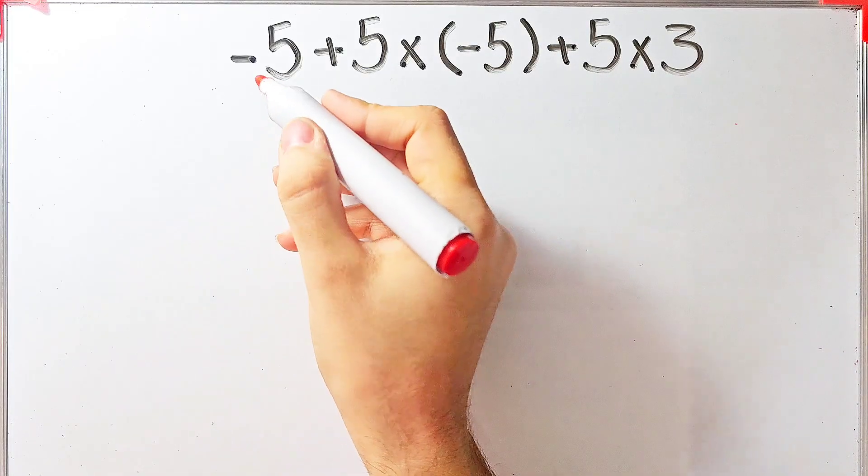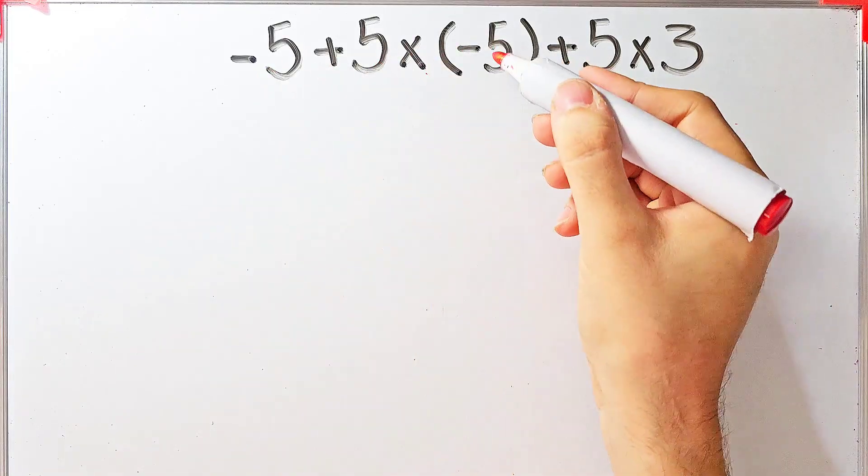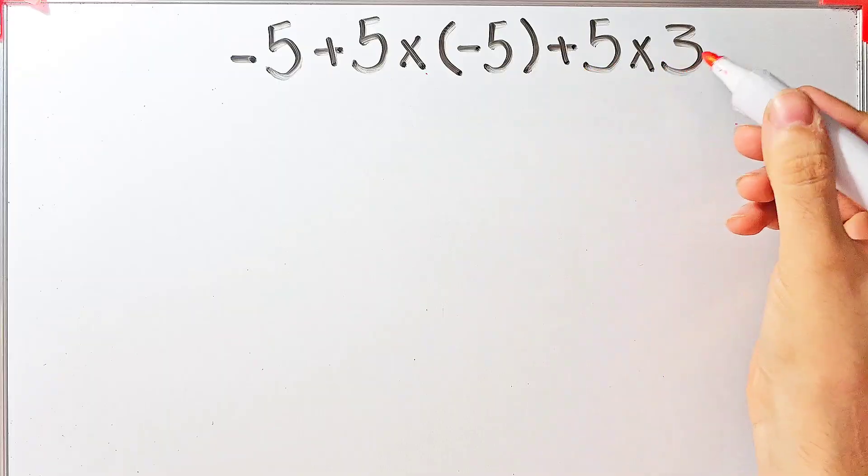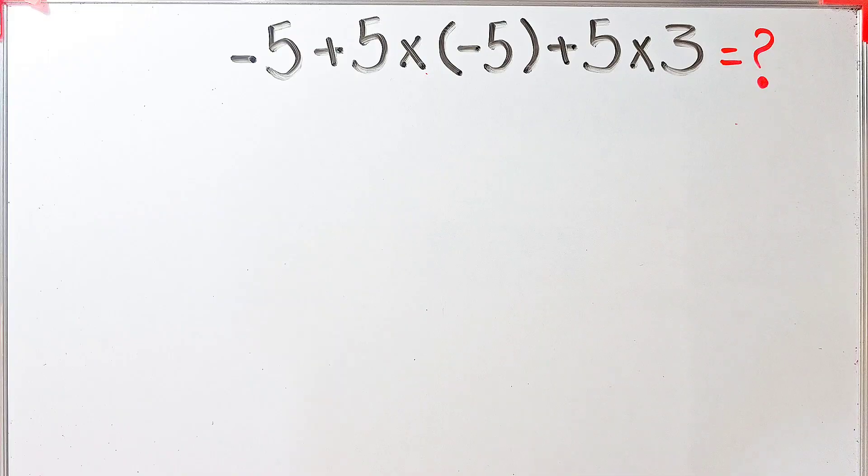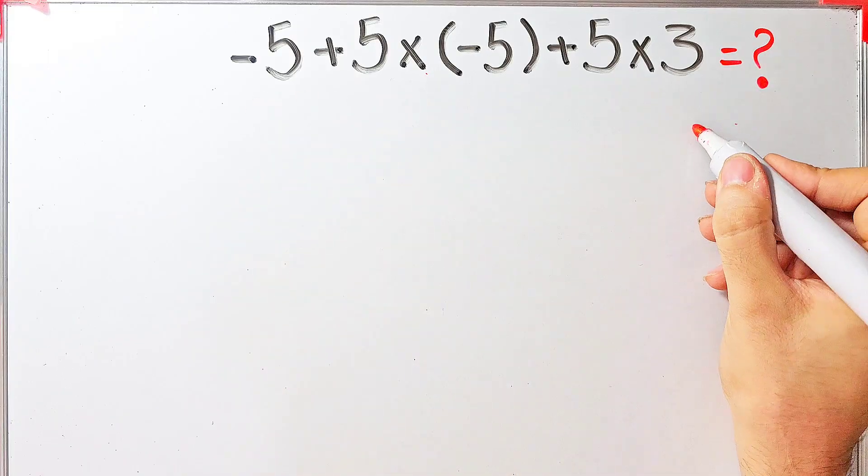The question is negative 5 plus 5 times negative 5 plus 5 times 3. What is the answer of this question? To solve this question, we need to follow the order of operations, which is PEMDAS.